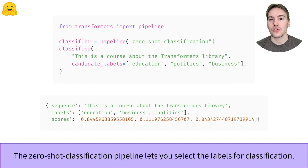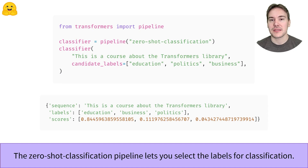Zero-shot classification allows you to provide the labels you want. Here we want to classify our input text along the labels education, politics, and business. The pipeline successfully recognizes it's more about education than the other labels, with a confidence of 84 percent.